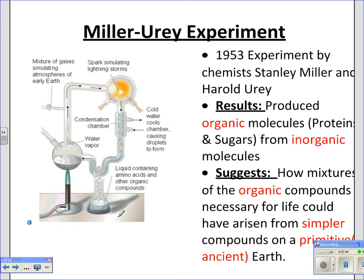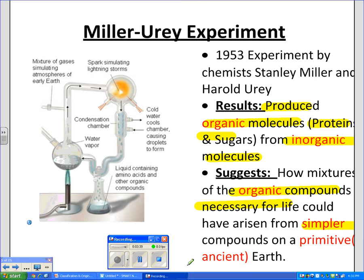These two scientists asked themselves the same question and built an experiment to test it. They basically put water into a sterile flask, boiled it, and added methane, ammonia, and hydrogen to simulate what they thought was the composition of the early Earth. They ran it through with some electrodes to simulate lightning, then condensed it so it would form back into liquid droplets. They ran it for about a week, and the results were really amazing — they were able to produce organic molecules like proteins and sugars from the inorganic toxic mix that was our early atmosphere. This really suggests that the organic compounds necessary for life on Earth could have arisen from simpler compounds in this primitive, ancient Earth.